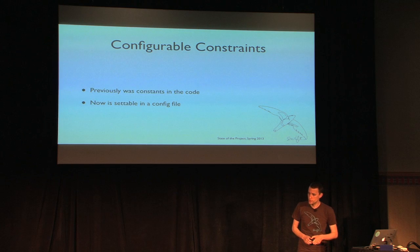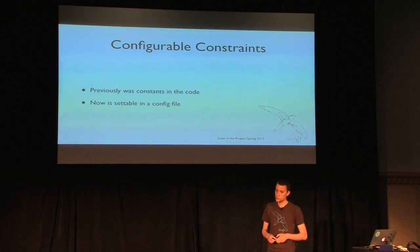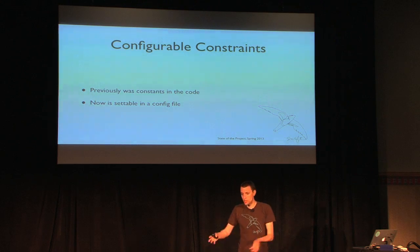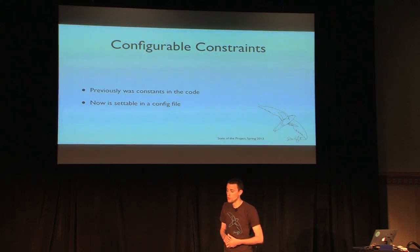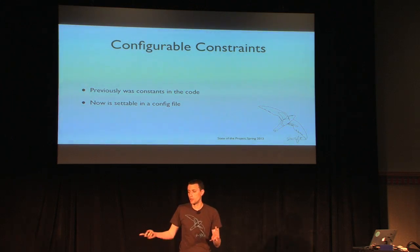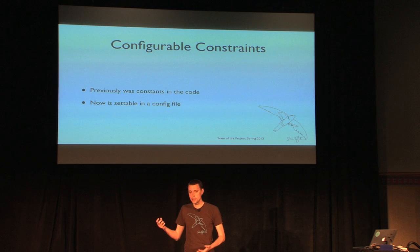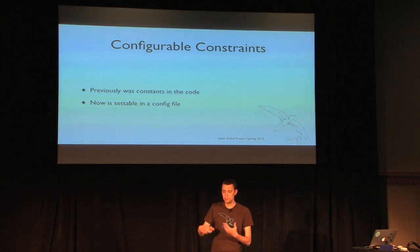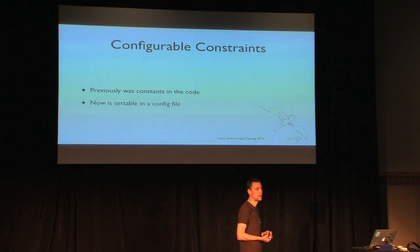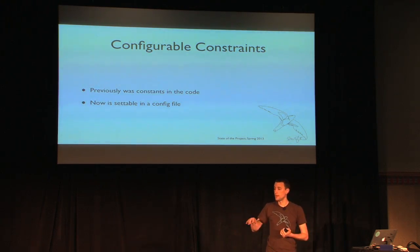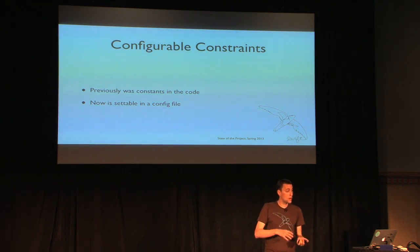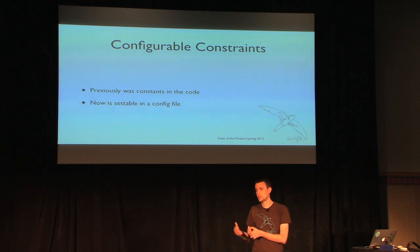Another nice feature for deployers is configurable constraints. Several things within Swift were just hard-coded constants — for example, the largest object size, the length of an object name, and the amount of metadata you could store on a particular object. These have been pulled out and placed in a config file, configurable to a particular deployment's requirements and even changeable over time.